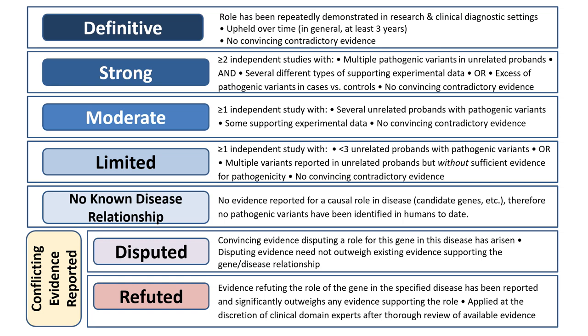The classifications take into consideration both evidence for and evidence against a gene disease relationship. For gene disease pairs with supporting evidence, classifications range from definitive to limited. Definitive gene disease pairs have considerable supporting evidence — genetic evidence with or without experimental — that has been replicated and upheld over time, generally at least three years. If a gene disease pair has considerable evidence but has only been newly discovered within the last three years, it will be classified as strong. Moderate and limited classifications have less compelling evidence, respectively. The category of no known disease relationship is reserved for genes suspected to be associated with a disease but in which no human variants have been reported. If there is evidence to contradict the relationship, the pair may be classified as disputed or refuted, depending on the strength of the contradictory evidence.